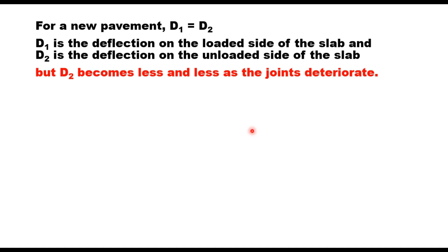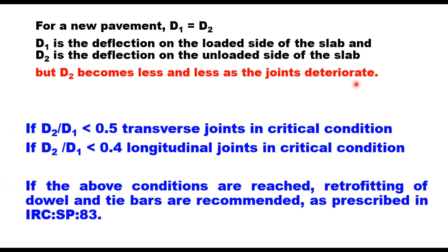For a new pavement, D1 should be equal to D2. That means 100% load transfer efficiency. Now D2 is the deflection on the unloaded side of the slab. And this D2 becomes less and less as the joint deteriorates. If this D2 upon D1 is less than 0.5, transverse joints are in critical condition. If D2 upon D1 is less than 0.4, then longitudinal joints are in critical condition. And if these conditions are reached, then retrofitting of dowel bars and tie bars are recommended as prescribed in IRC SP83.